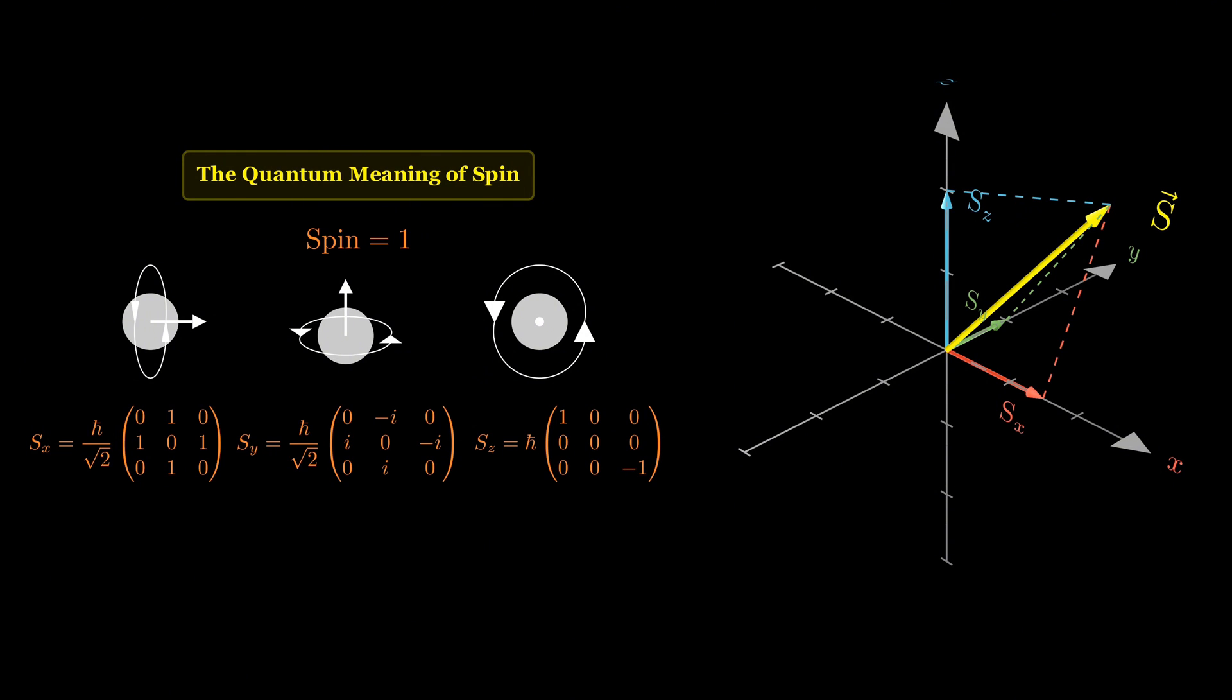But here's the quantum wonder. In quantum mechanics, each component of spin isn't a number, it's a matrix. For a spin one particle, the matrix representing the z component of spin is a three-dimensional matrix.